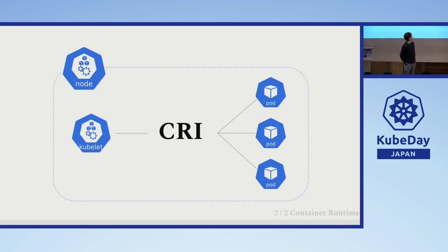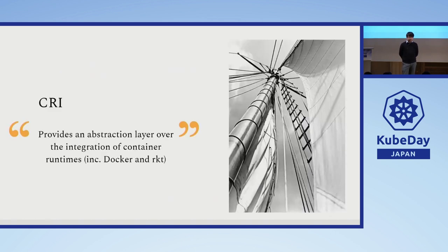Now we do have this standardized interface called CRI. CRI basically gives Kubernetes an abstraction layer, it makes the runtime providers able to make changes more flexibly, and also Kubernetes core no longer depends on different external projects or libraries.